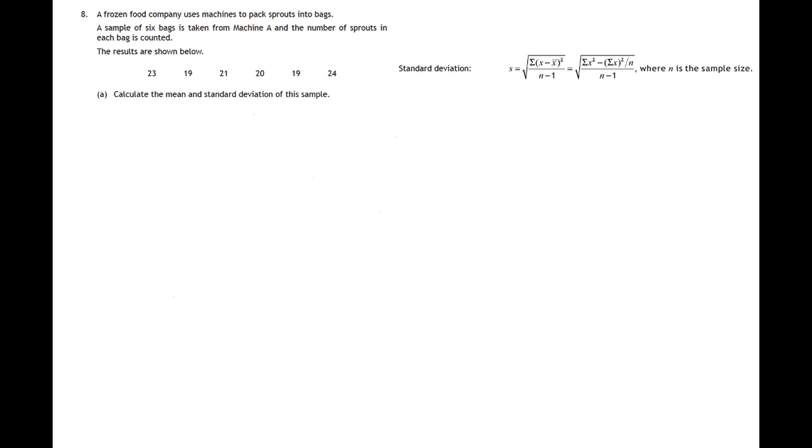So let's look at the formula that appears in your formula sheet. There's two versions for the standard deviation. This first one involves the letter X, which is just a data value. So X stands for these values here, the 23, 19, 21, 20, 19 and 24.